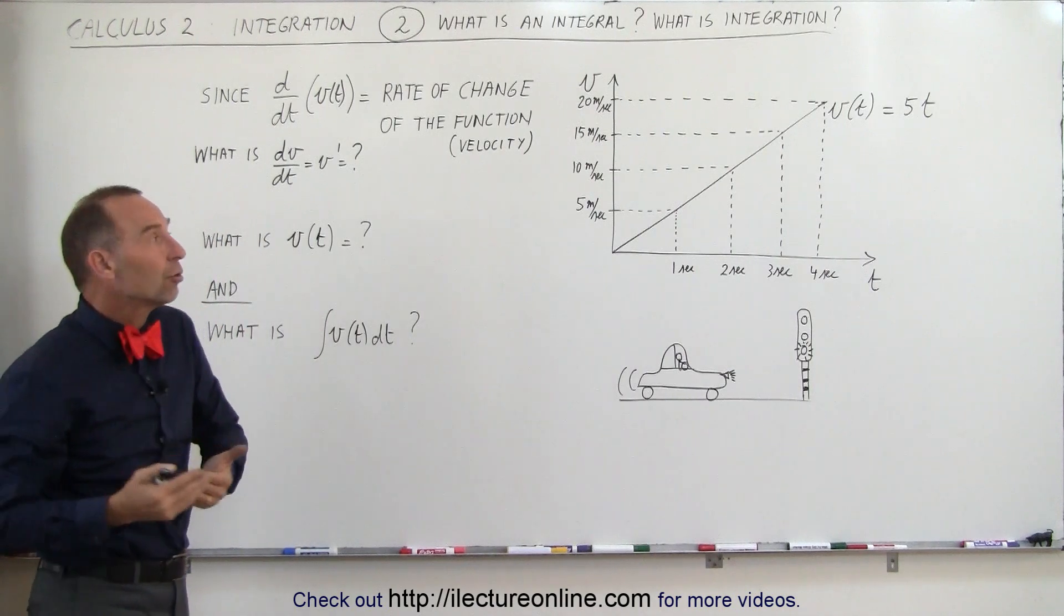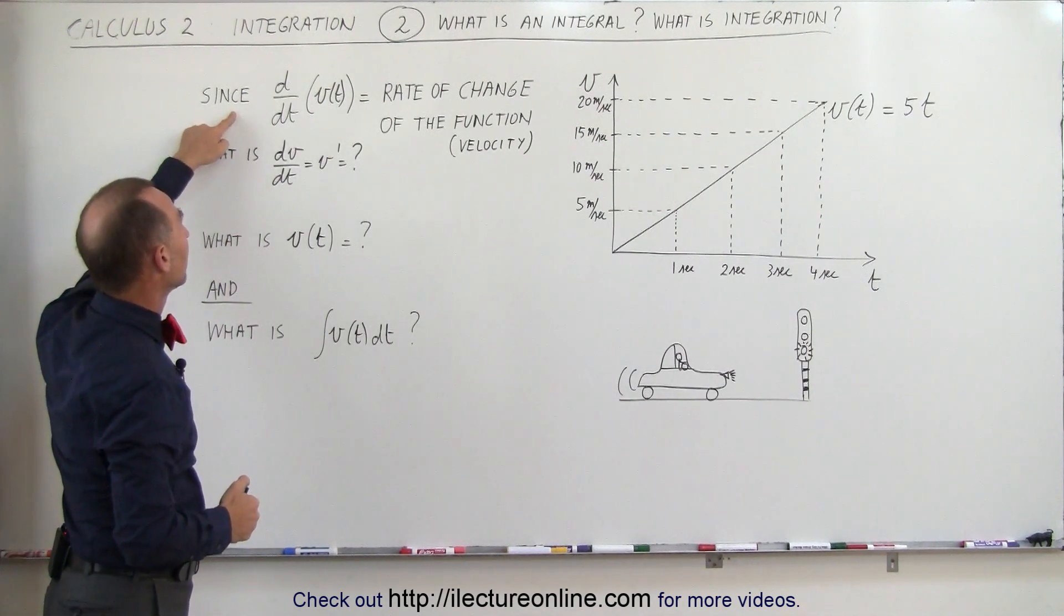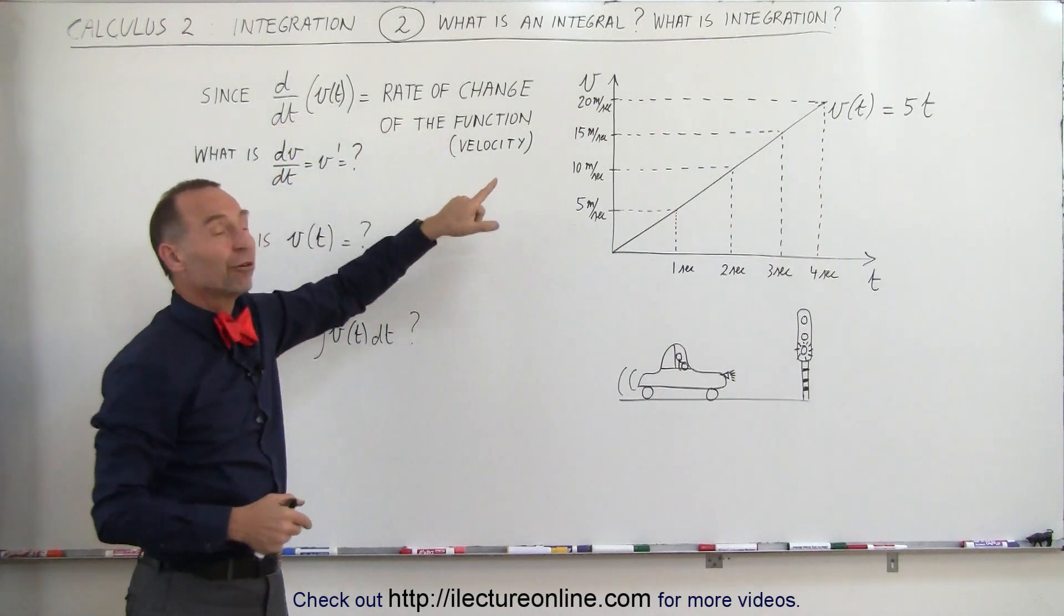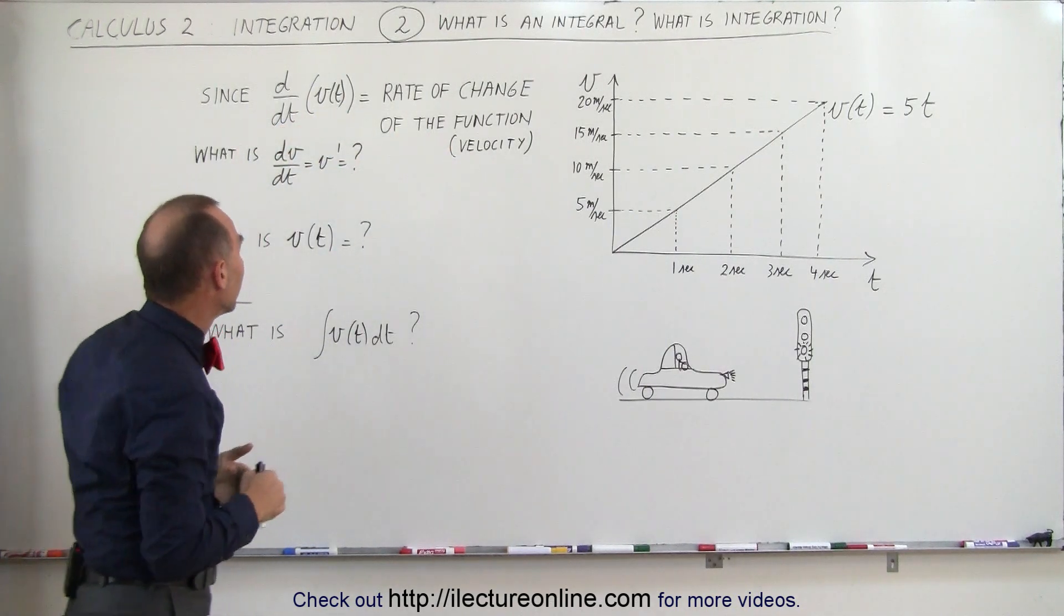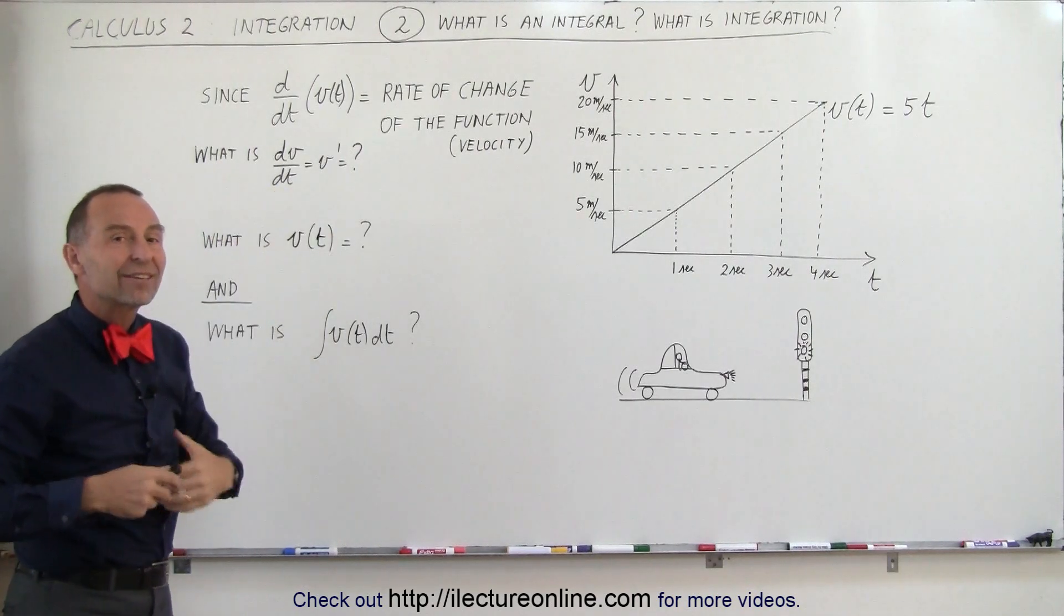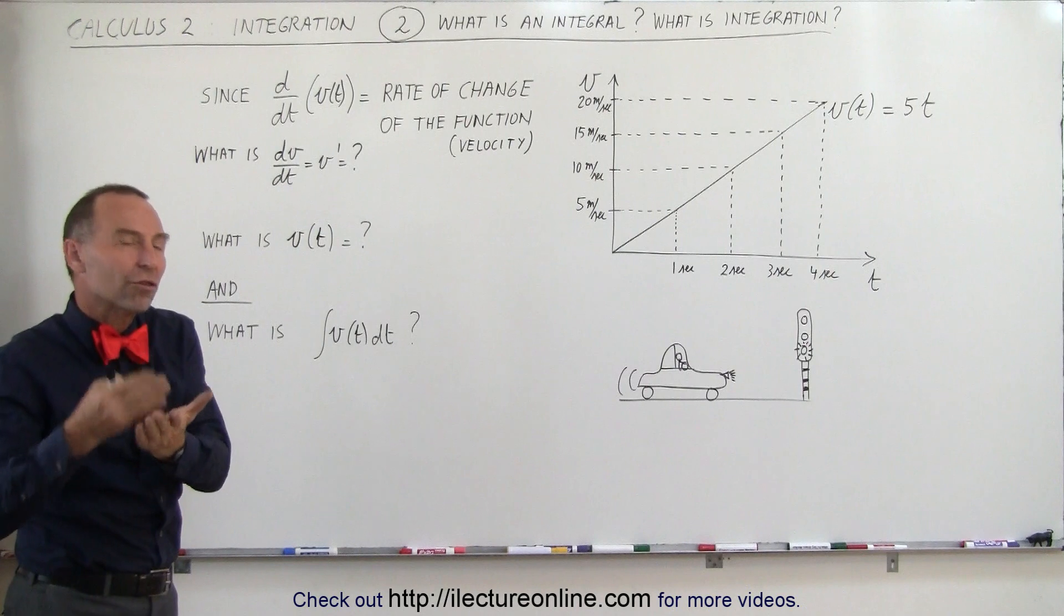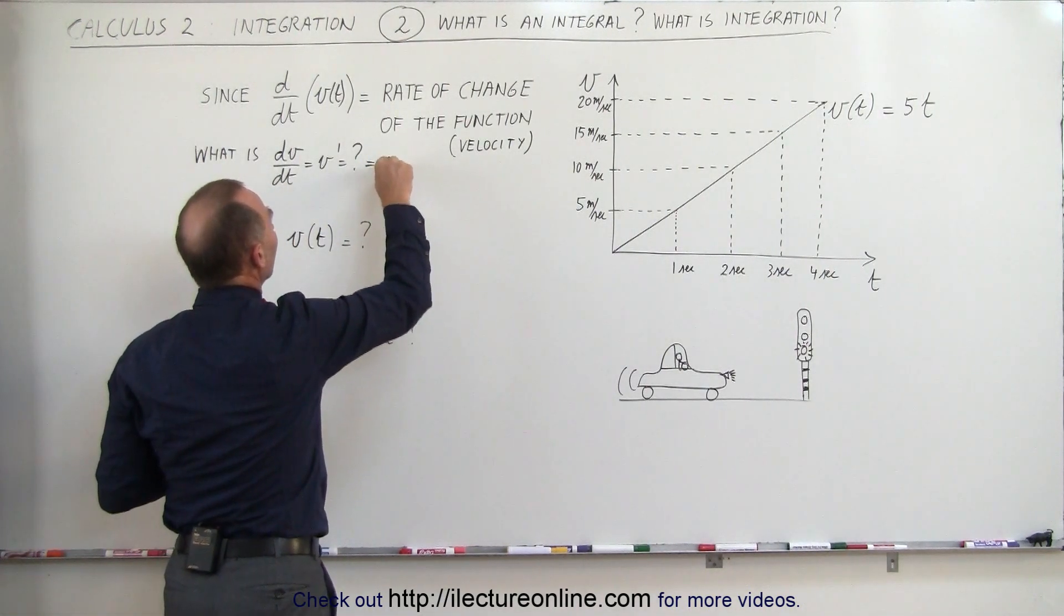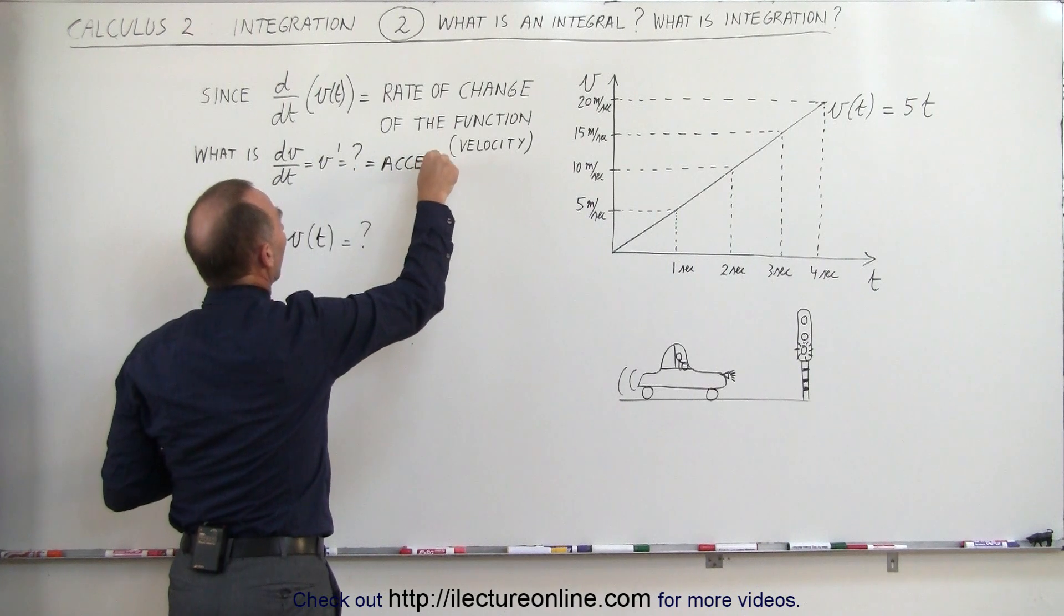What do we get when we take the derivative of the function? The d/dt of v(t) is the rate of change of the function. In this case, the rate of change of the velocity. So what is dv/dt or v prime? It is the acceleration. The rate of change of the velocity is the acceleration. So in this case, the derivative represents the acceleration of the motion.